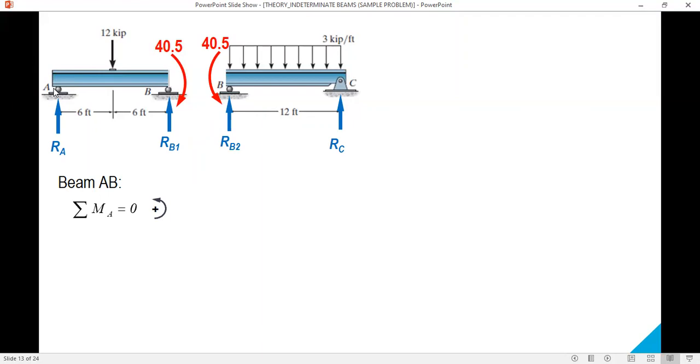For span AB we sum up moment about A and we can solve for RB1. This is the equation: negative 12 (since our sum convention is counterclockwise positive, about A, 12 is clockwise) times distance, and then moment negative (also clockwise) plus RB1 times distance 12. Simplify, add and then transpose, after that divide by 12. The result is 9.375.